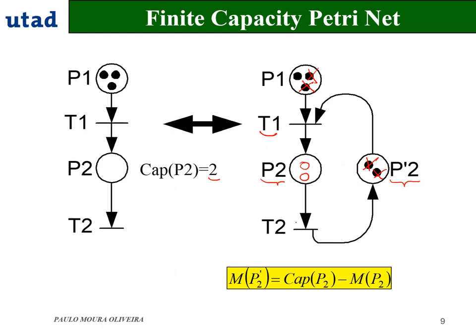A mathematical equation modeling this is: the marking of Pbar2 equals the capacity of P2 — which is 2 — minus the marking of P2. Initially the marking of P2 is 0, so the sum is always 2, no matter how the system evolves.